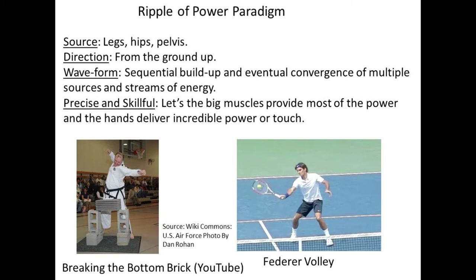I believe the ripple of power paradigm has all these advantages over the kinetic chain model. Ripple of power conveys the major source of power — the legs, hips, and pelvis — although not always, as we saw with Cristiano Ronaldo's reverse scissor kick in the air, where most of the power comes from the scissoring legs. Ripple of power also better describes how power in the human body is developed in sequential actions of parts of the body and the eventual convergence of multiple sources and streams of energy in a wave-like action. Finally, ripple of power describes how the big muscles of the body provide most of the power, enabling the hands to deliver either incredible power or a subtle touch.